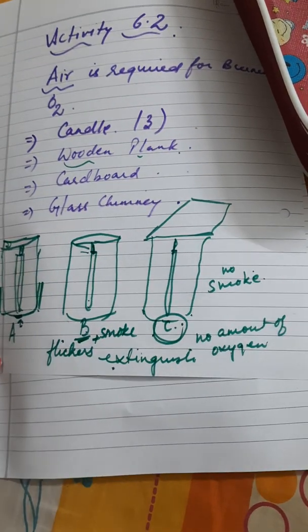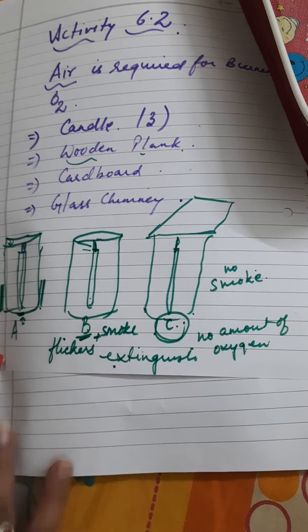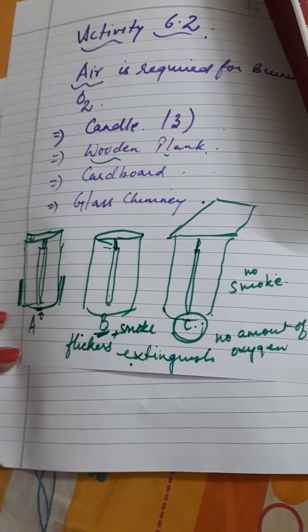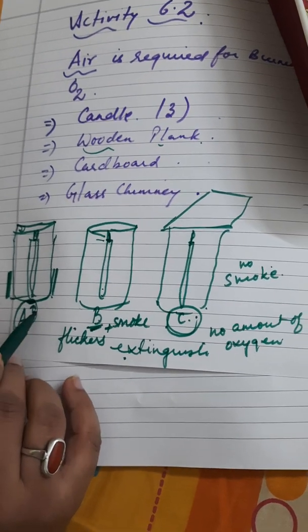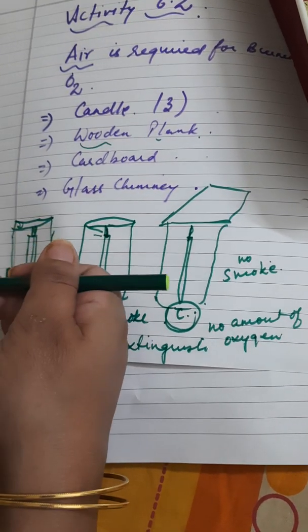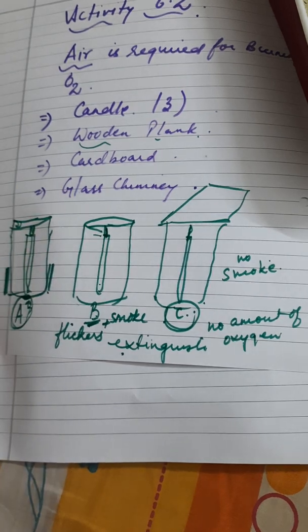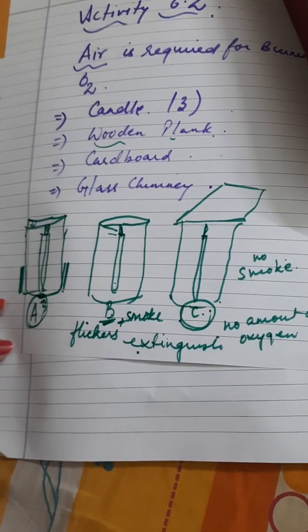Thoda dhoaan rahega. And the presence of oxygen which has been received by a candle is only candle A because from the base also it is getting sufficient amount of air.